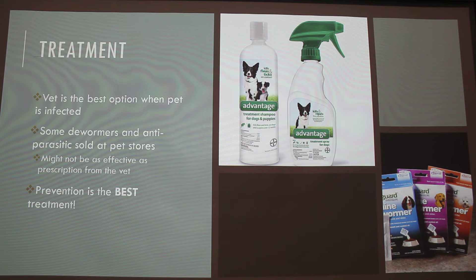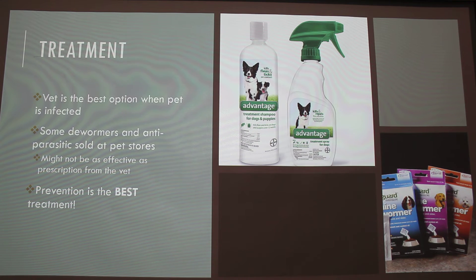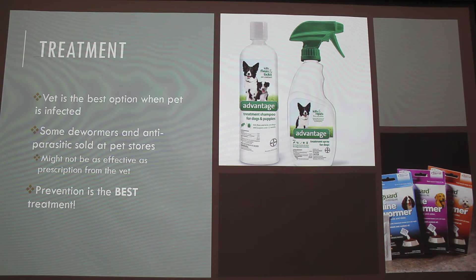Prevention is definitely the best treatment. It's a lot more expensive to treat external and internal parasites than to prevent them. With heartworm, the preventative is about seven dollars a month, but treatment can cost thousands of dollars. The treatment is really hard on dogs, and depending on the stage of heartworms when you find out, it might honestly be too late — the treatment could kill your dog.